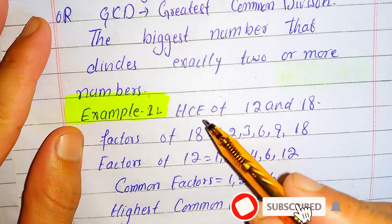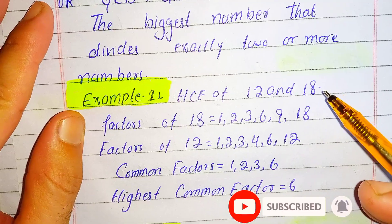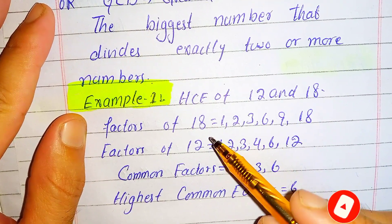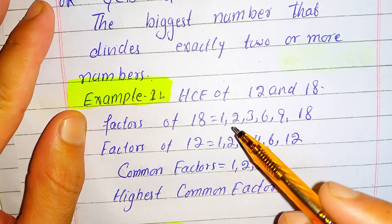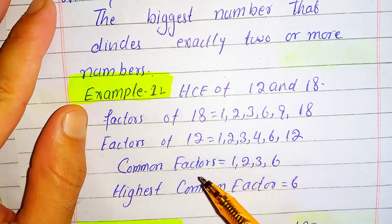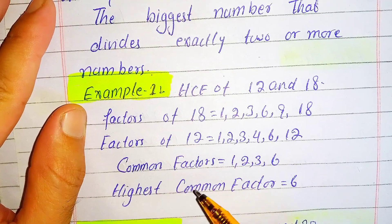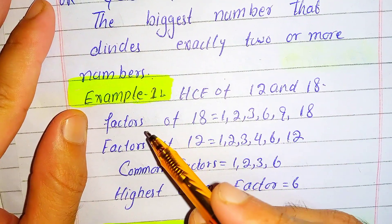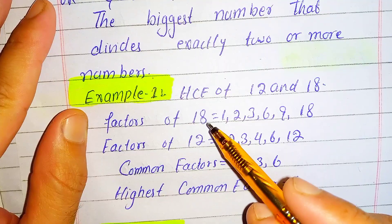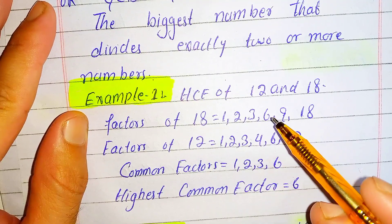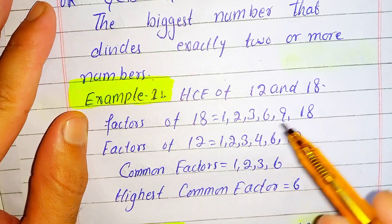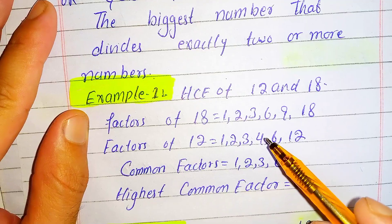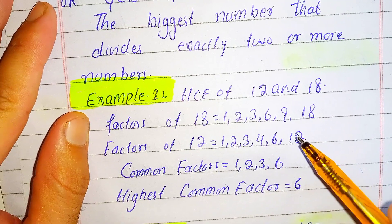For example, to find the HCF of 12 and 18, we find the factors of each number. The factors of 18 are: 1, 2, 3, 6, 9, and 18. The factors of 12 are: 1, 2, 3, 4, 6, and 12.